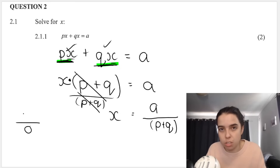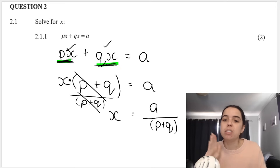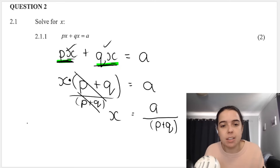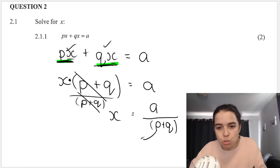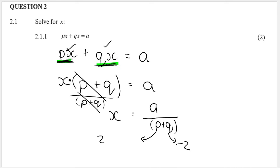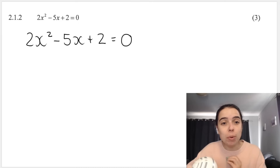In 2.1.2: 2x² - 5x + 2 = 0. This is a quadratic — three terms equal to zero — so factorize to get two brackets. Can't take out HCF (2 doesn't divide 5 evenly). This is a trinomial with a coefficient on x². I'll use the 'cheat method' to factorize.